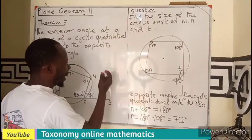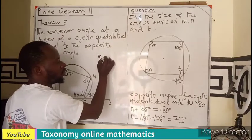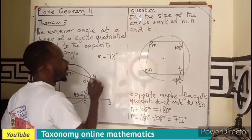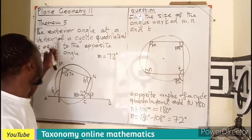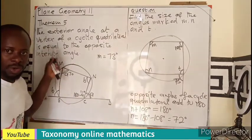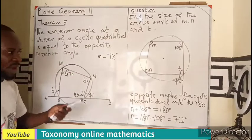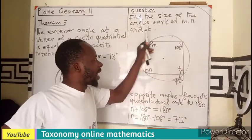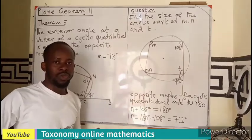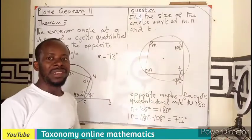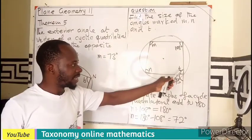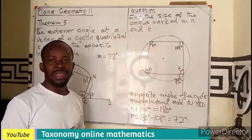So in this case, I can say that the angle M is going to be 73 degrees after I quote this property or this theorem saying that the exterior angle at the vertex of a cyclic quadrilateral is equal to the angle in the opposite segment. So I can say that this is equal to 73.